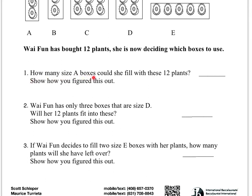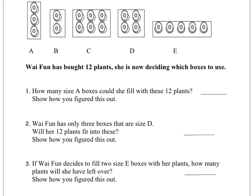How many size A boxes could she fill with these 12 plants? Show how you figured this out. Well, you've got to figure out how many plants can fit into the size A box. There's 3 there. And then you've got to figure out if she has 12 plants, how many of these boxes would you need? You're going to basically divide 12 by the number of plants that fit into a size A box. That will tell you how many of those size A boxes you'll need. If you have a remainder, then you're going to need an extra box for that remainder.